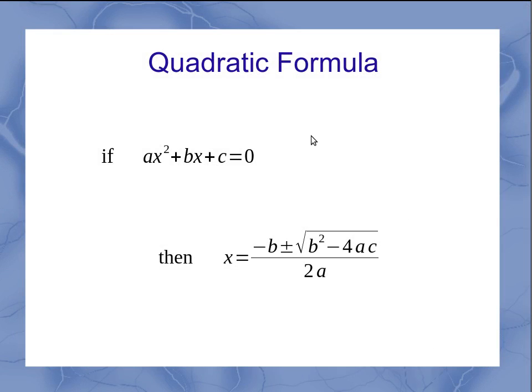The quadratic formula says, if I have an equation of that form, then I can find the solution, the value for x, using this. And in general, there's two solutions for every quadratic equation. One of them is found when you've got the plus sign, and one of them is found when you're using the negative sign. So you actually solve this equation twice.